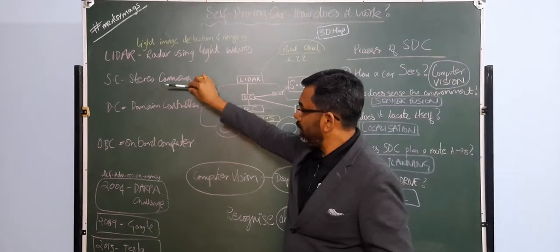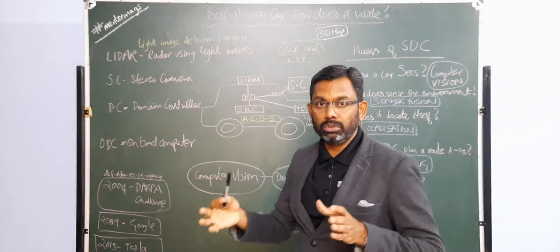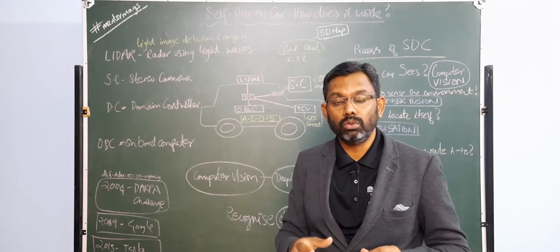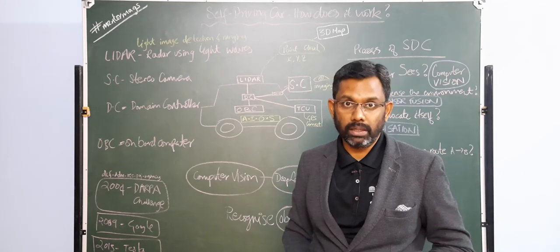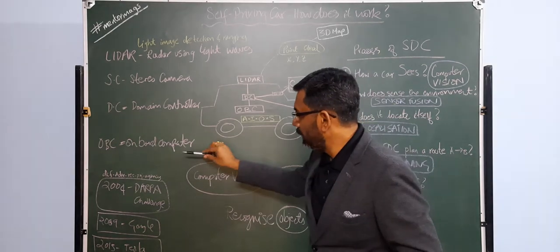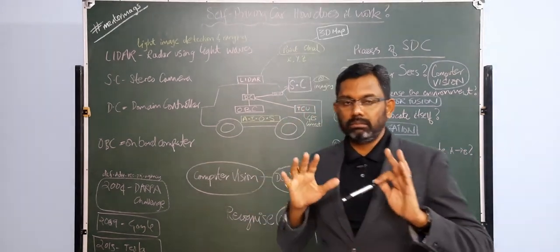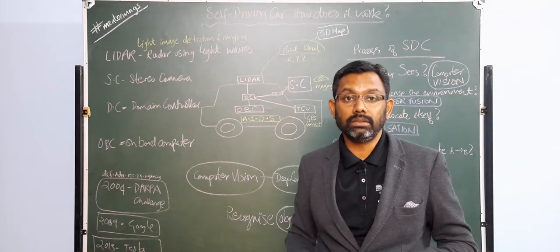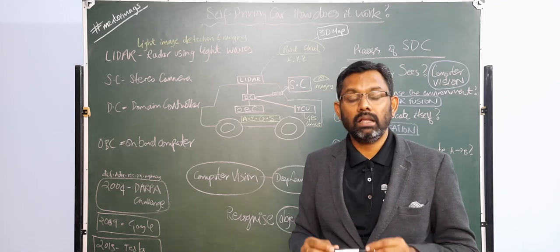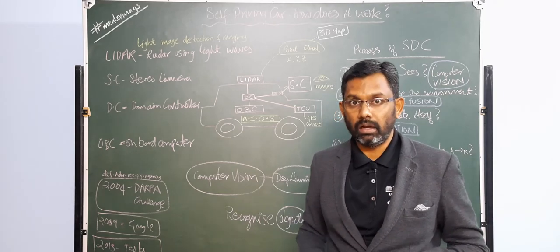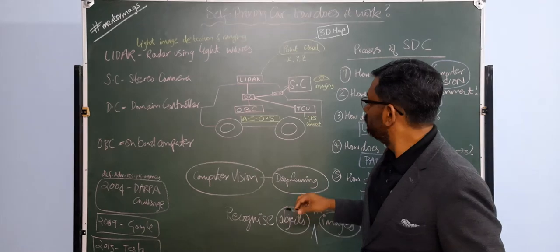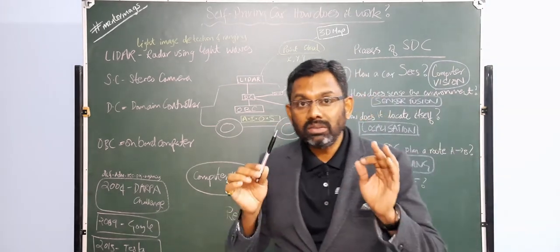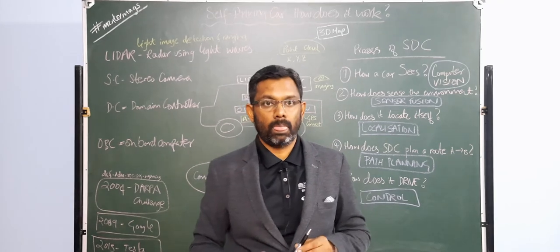So LIDAR, stereo camera, there is a domain controller which communicates with all the electronic control units within the autonomous vehicle, and there is an on-board computer. These are, broadly speaking, the important subsystems that we must take into consideration in order to understand the working of a self-driving car.